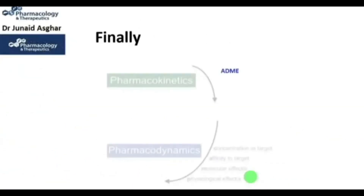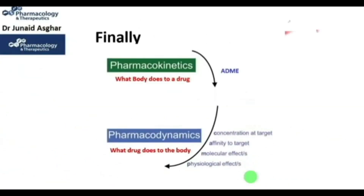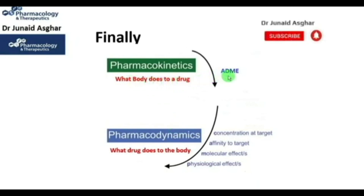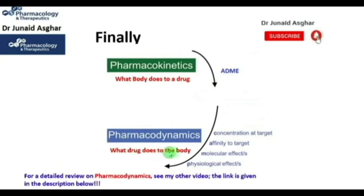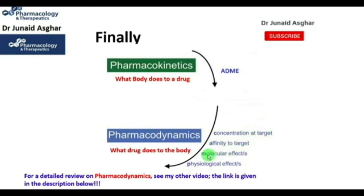Finally, pharmacokinetics is what the body does to a drug in terms of its ADME. Whereas pharmacodynamics is what the drug does to the body in terms of its concentration at the target site, its affinity to the target, and a drug's molecular, physiological, or pharmacological actions.